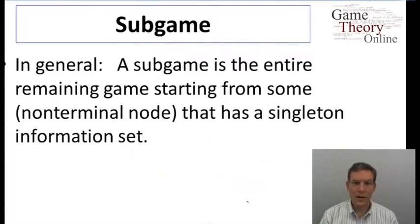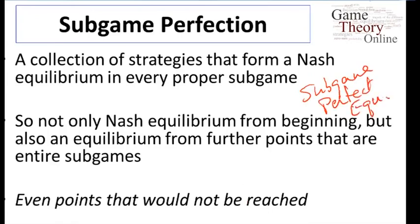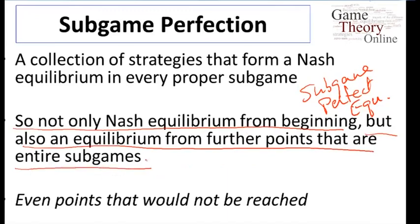In general, a sub-game is the entire remaining game from some non-terminal node that has a singleton information set. With the definition of sub-game in hand, we can define sub-game perfect equilibrium. A sub-game perfect equilibrium is a specification of strategies that form a Nash equilibrium in every proper sub-game, including the original game itself. So it has to be not only a Nash equilibrium from the beginning, but it also has to look like a Nash equilibrium from all further points that are entire sub-games.